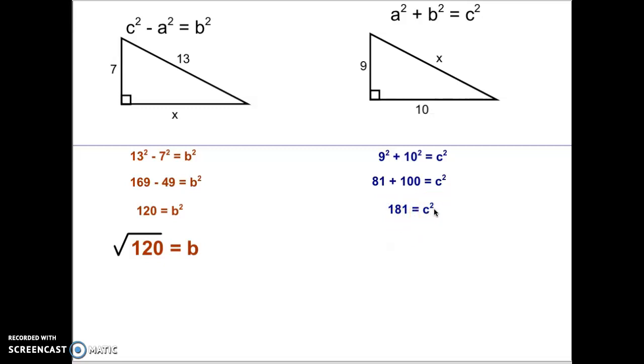When we take 181 and we plug it in, it again does not turn out to be a nice number. So because of that, we just take the square root of both sides to be the square root of 181 = c.